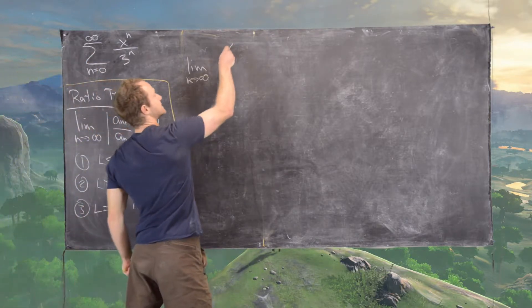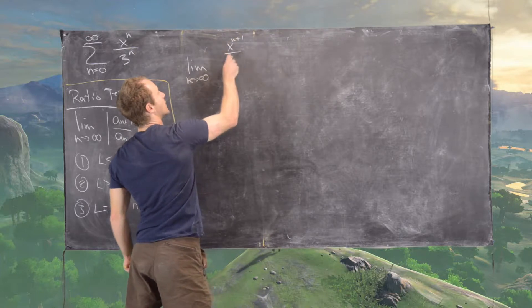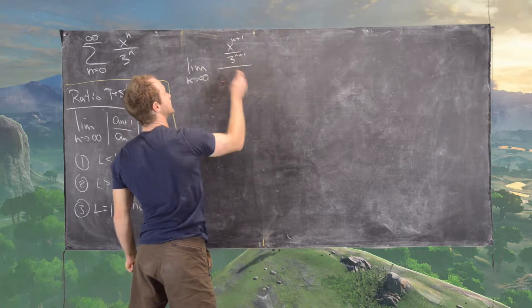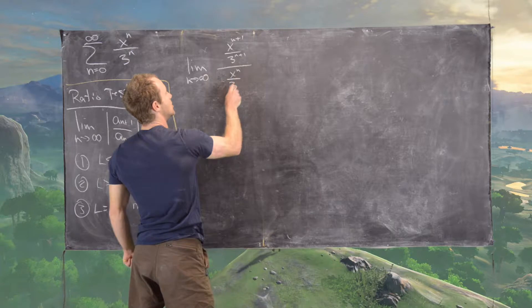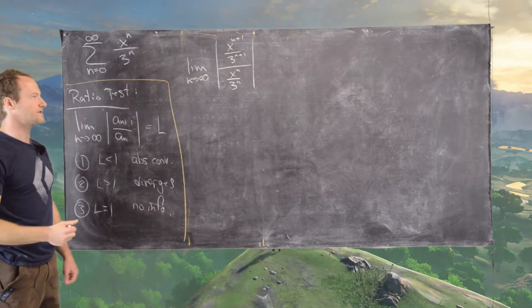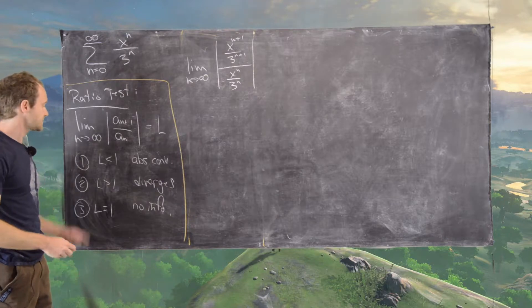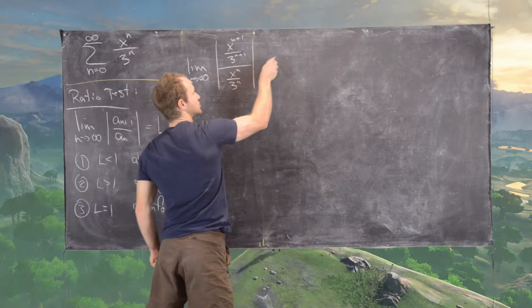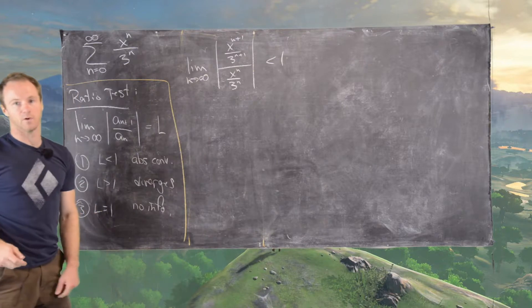So let's see, that will give us x to the n plus 1 over 3 to the n plus 1 divided by x to the n over 3 to the n, all of that in absolute value. That's what we need to take the limit of. And then since our goal is for this to converge, we'll set that less than 1.